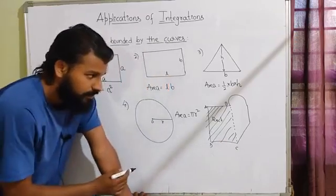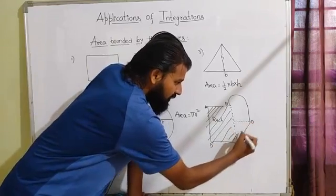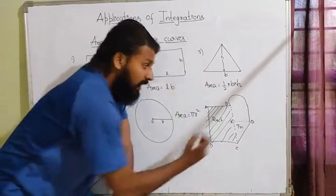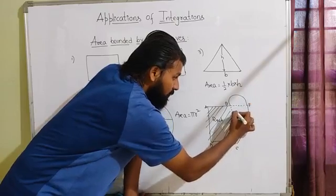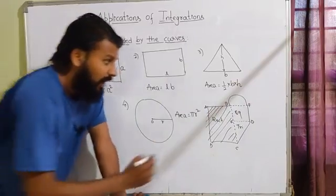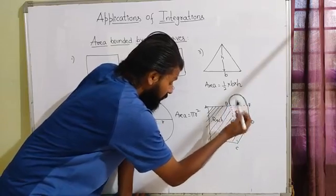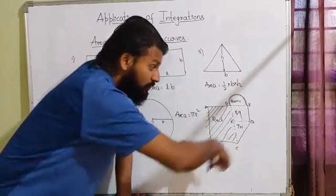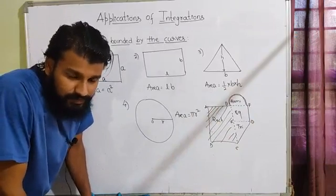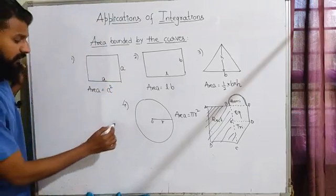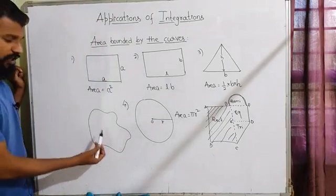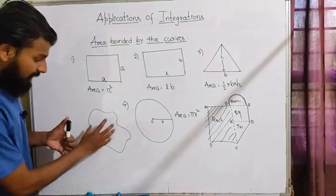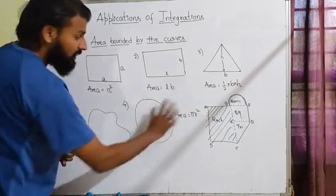You'd put a dot here and call it point D, making it a triangle — say triangle CDE — and apply the triangle area formula. Then another dot makes a square, and you apply the formula for a square. This particular part would be a semicircle, so you apply the formula for area of a circle divided by two, and you get the area of the whole irregular shape.